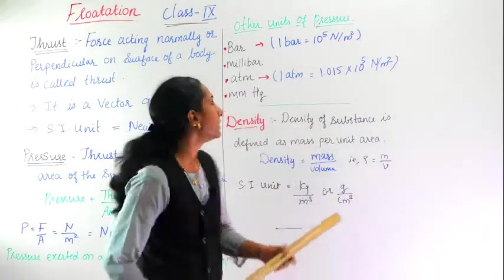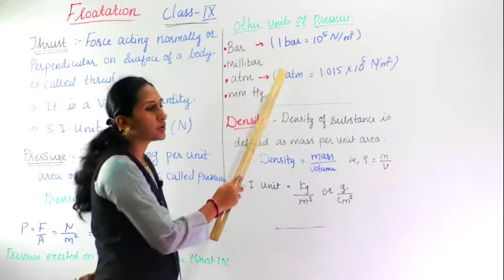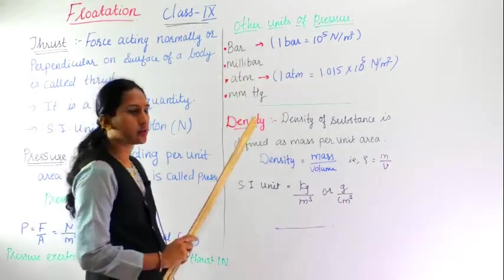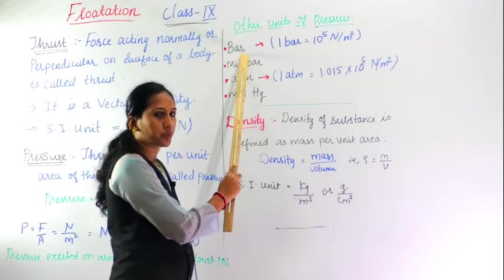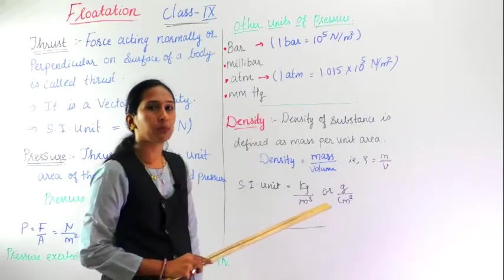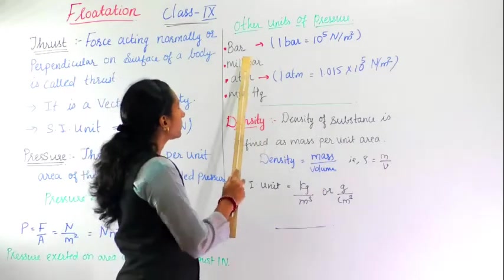We are going to see some other quantities. Here you can see other units of pressure which you are going to study is the bar. Pascal you have already studied in 8th standard. Now you will study about the bar. What is the value of 1 bar? 1 bar is 10 raise to 5 Newton per meter square. Then second unit is millibar.